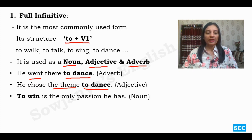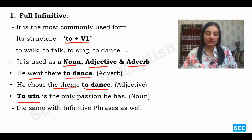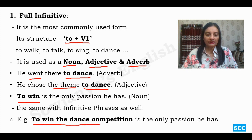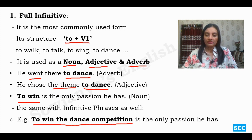'To win is the only passion he has.' Something is the only passion he has — and by default, things in that position are nouns. So here 'to win' is acting as a noun. The same applies to infinitive phrases as well. For example: 'To win the dance competition is the only passion he has.' The entire phrase acts as a noun, justifying that it can function as a noun.